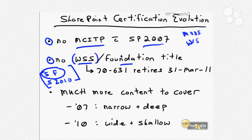Is it worthwhile pursuing the WSS or MOSS 2007 titles? There's no upgrade path from the previous version, so if you're starting from scratch, I would suggest going directly to what we're studying now — the 667 exam — and certify on SharePoint 2010. It's a little surprising to see Microsoft announcing this retirement so early. On the Microsoft Learning website, they've published that the 70-631 test — the one on WSS 3 configuration — is scheduled to retire on March 31, 2011. It's disappointing, but it's the way of the Microsoft certification world.